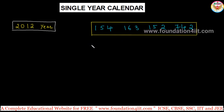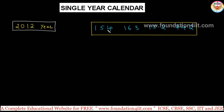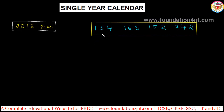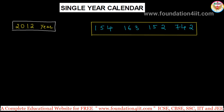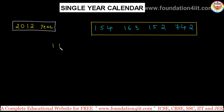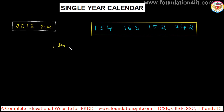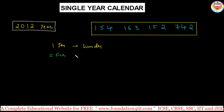Each number in the code represents a month of the year. January is 1, February is 5, March is 4. To prepare this code, I'm taking the first Sunday of each month. For example, in January, the 1st is a Sunday; in February, the 5th is a Sunday; in March, the 4th is a Sunday. This is only for a particular single year.